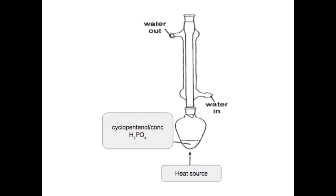This is what the reflux apparatus looks like. The condenser is in the vertical position — water goes in at the bottom and out at the top, giving the most efficient cooling of the vapour in the inner glass tube. The pear-shaped flask contains the reaction mixture of cyclopentanol and concentrated phosphoric acid, with the heat source below, whether a water bath or heating mantle.